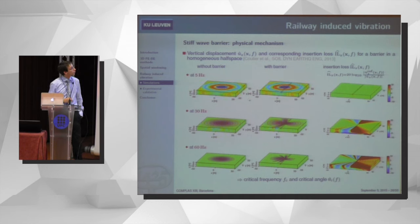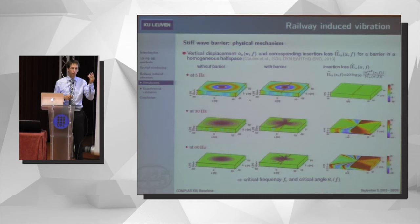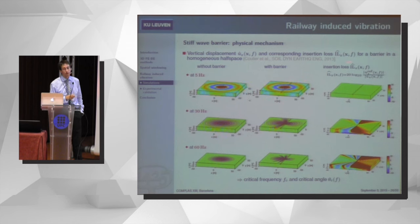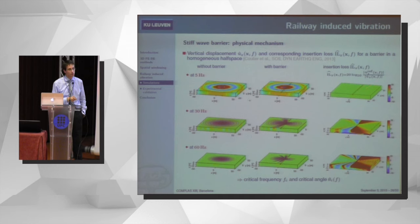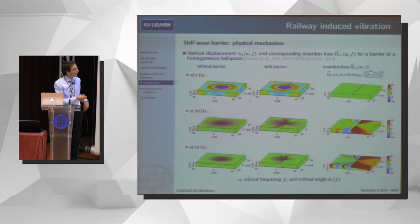Traditionally the typical measure is an open trench — you cut the transmission path between source and receiver. The problem is that in practice an open trench is unstable, so people fill it with a soft material like foam to mimic the behavior. However, stability problems remain and the efficiency of soft-filled trenches in soft soil is not that good. We looked at a paradigm shift: filling the barrier with a material stiffer than the soil. Using the computational tools developed, we investigated whether such an approach would be efficient. The wave fields at 5, 30, and 60 Hz show that at low frequencies the barrier has essentially no effect, but from about 30 Hz upward you see clear reduction in a zone behind the barrier at a certain angle.